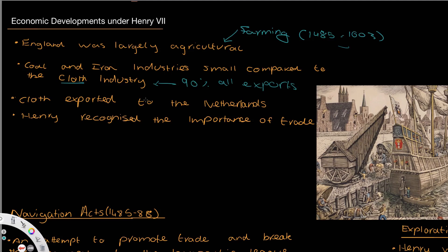Iron and coal would improve during the Industrial Revolution, which happened later in English history. Cloth was exported to the Netherlands, which is where we see some links to foreign policy. When there were tensions between Burgundy and the Netherlands, Henry introduced a trade embargo on the Netherlands, which then led to the Intercursus Magnus. Around 90% of exports went to the Netherlands.